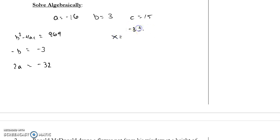Negative 3 plus or minus the square root of 969, all over negative 32. And remember though, this says I have two solutions. Negative 3 plus the square root of 969, over negative 32, and negative 3 minus the square root of 969, over negative 32.